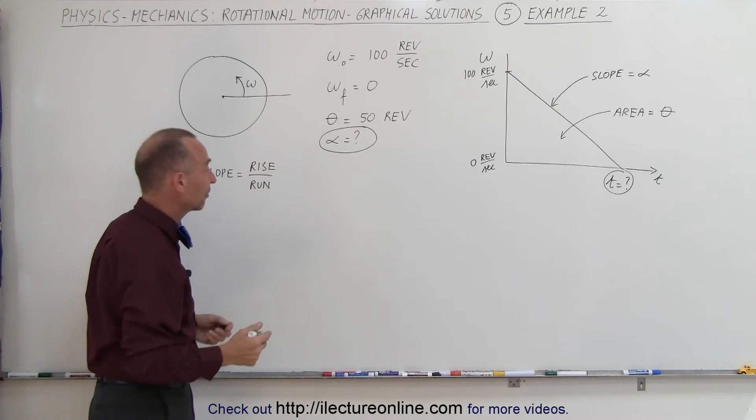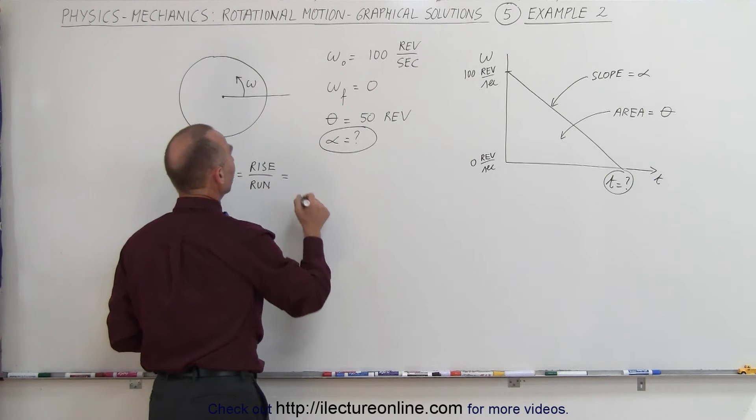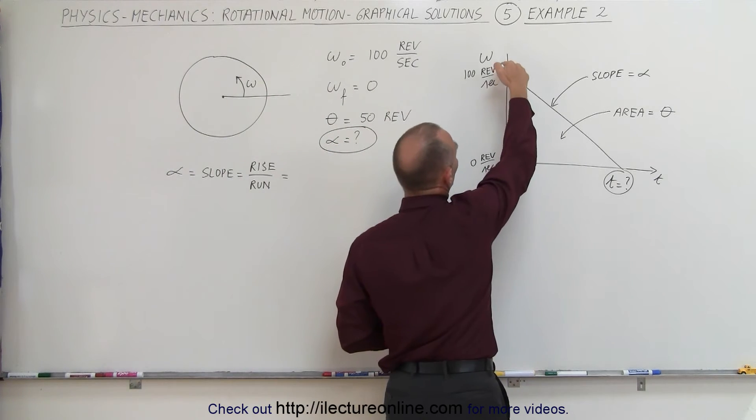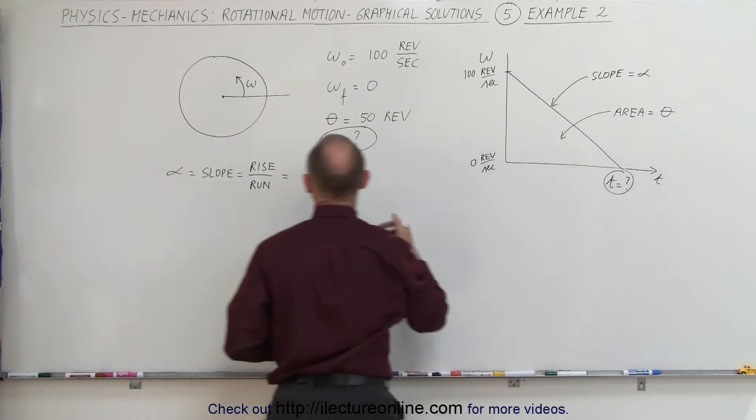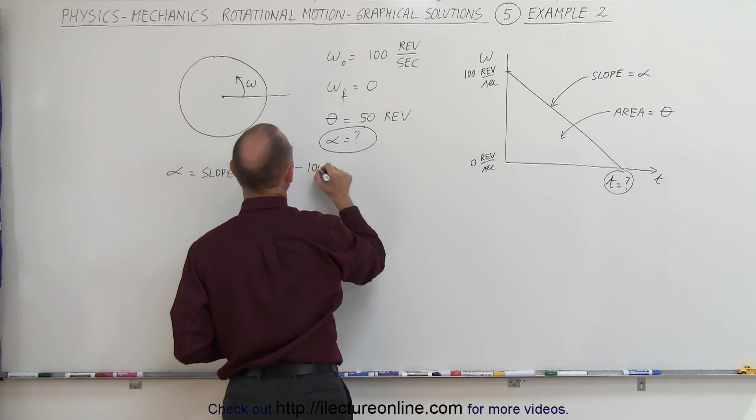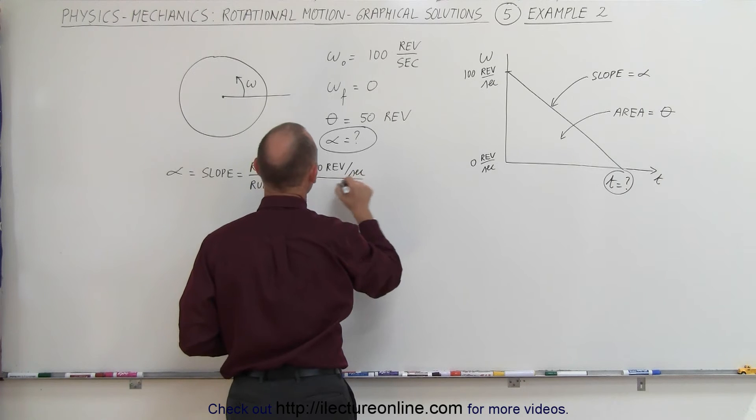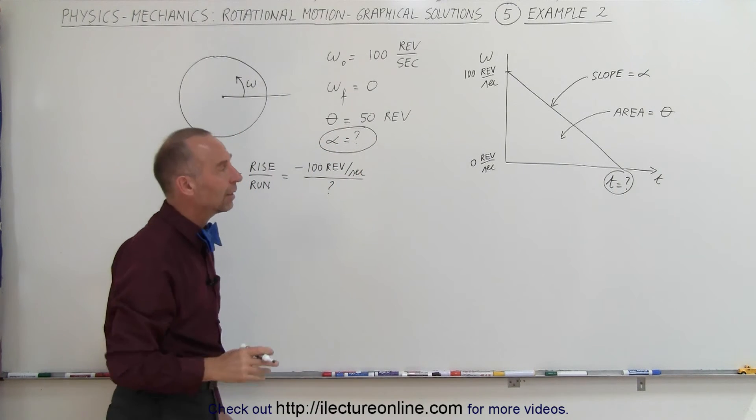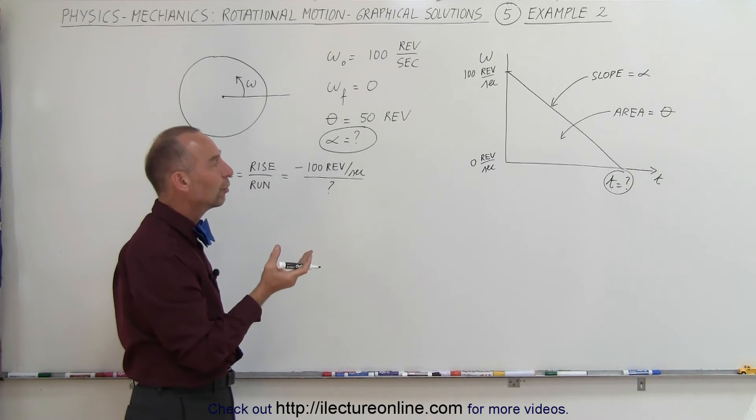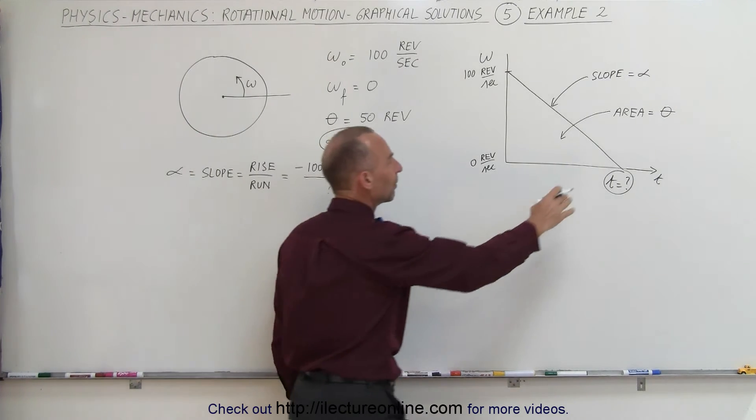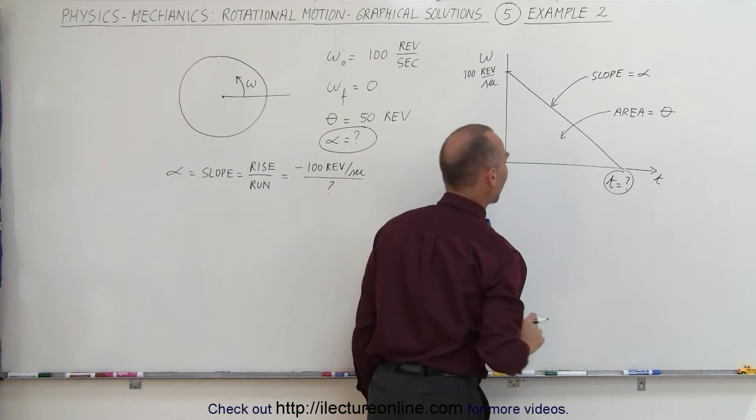In this case it's a negative rise, it's actually a drop because it's a negative acceleration. We know that the drop is going to be 100 revolutions per second, so it's minus 100 revolutions per second. But we don't know what the run is. We don't know the amount of time elapsed. So what we need to do first is use the information we got about the area to find the time elapsed.